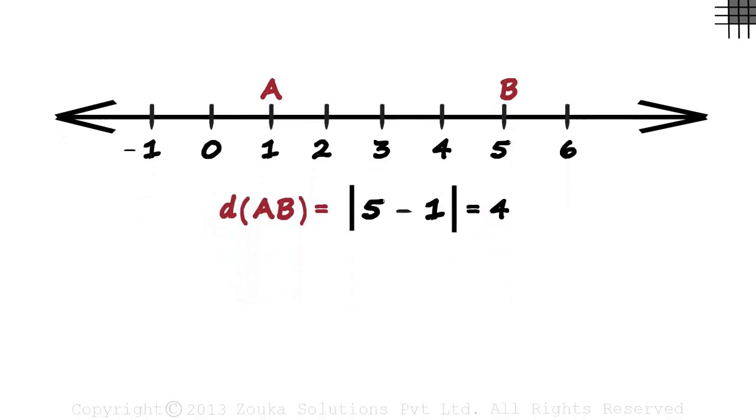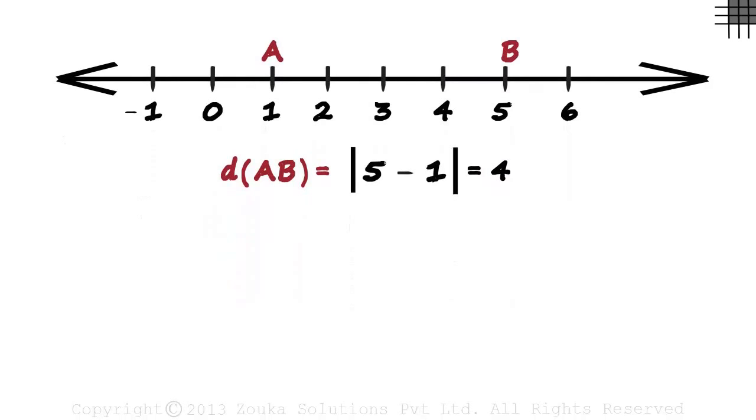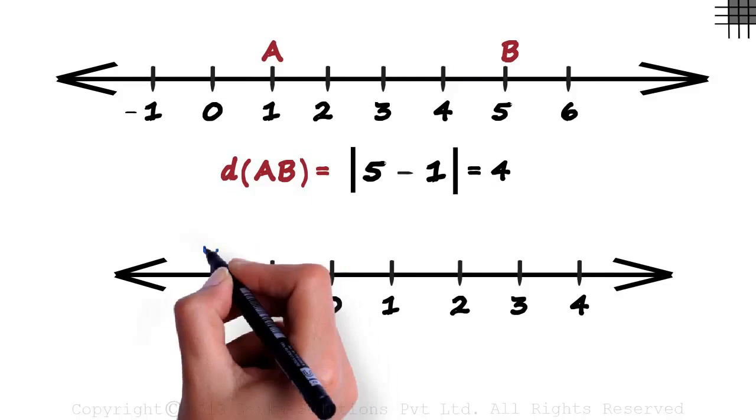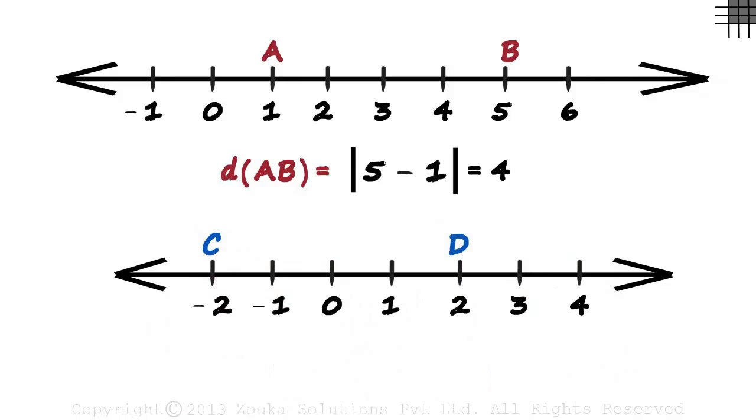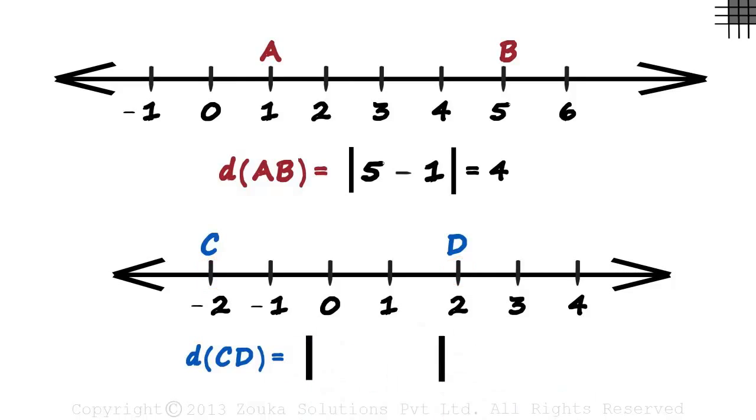Here's another example. This time we have to find the distance between points C and D. The first thing you should do is look at the endpoints of the segment. The endpoints are two and minus two. So the distance between points C and D will be absolute value of two minus negative two. Two minus negative two is four, and absolute value of four is four. The length of segment CD is four units.